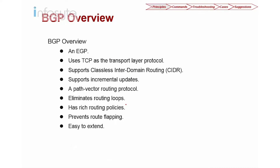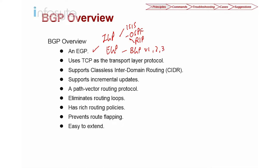Let's look into the BGP overview. BGP is considered an EGP. We only have IGP and EGP. IGP includes ISIS, OSPF, and RIP. For EGP, we only have BGP. BGP has version 1, version 2, version 3, and the current version is version 4. So we are looking into version 4 at this point in time.